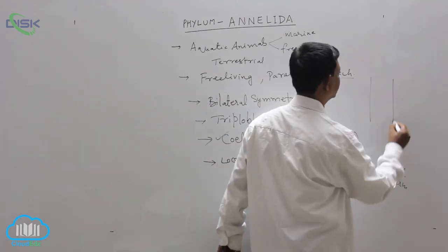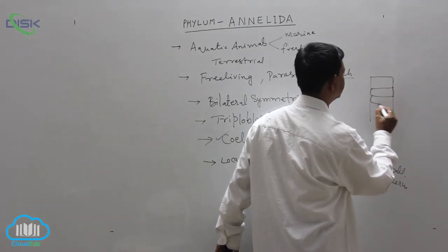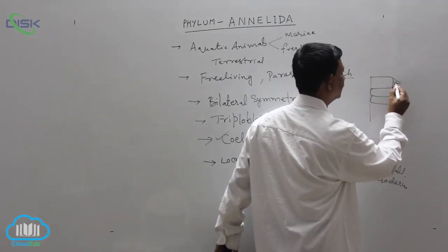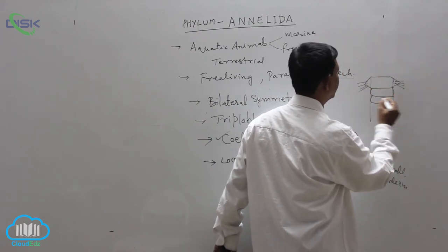For example, you can take here, this is the segments, body segments. Here in the body segments, large number of setae are present. This is known as the parapodia.